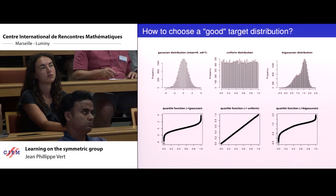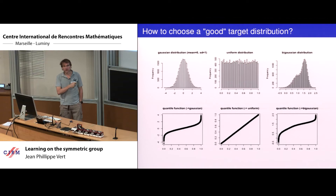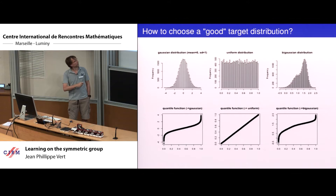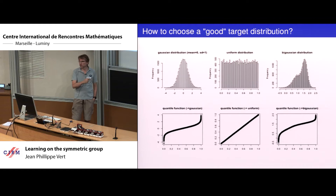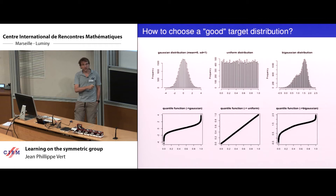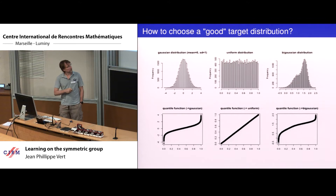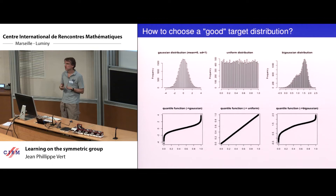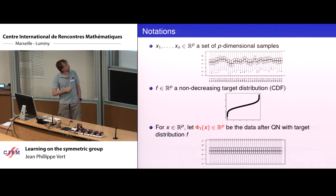You may say you want your data to look Gaussian at the end—this is used in image processing and geostatistical data. If you say your data are Gaussian, you define the Gaussian CDF, which is increasing. Once you rank your genes, the lowest-expressed gene gets value −4, the next −3.9, etc. It could be uniform, where the CDF is linear, or other distributions. The question is: how do you choose? Could we optimize it instead of picking one arbitrarily?